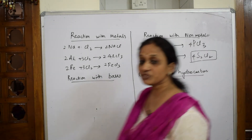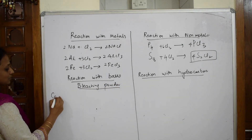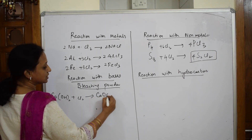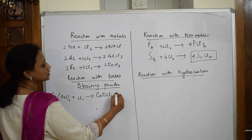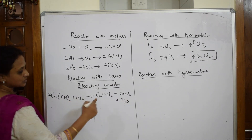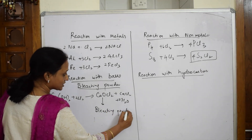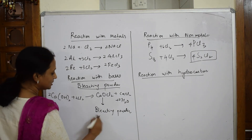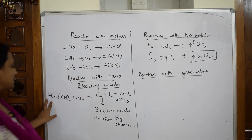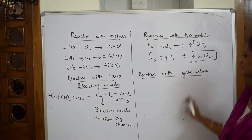Reaction with bases: calcium hydroxide reacts with chlorine to form bleaching powder. The products are CaOCl₂ (bleaching powder), calcium chloride, and water. This is also called calcium oxychloride. Balancing: calcium is 2, hydrogens are 2 on each side, chlorine is 2 — the equation is balanced. This is the preparation of bleaching powder.